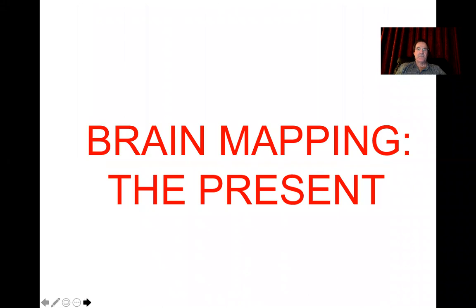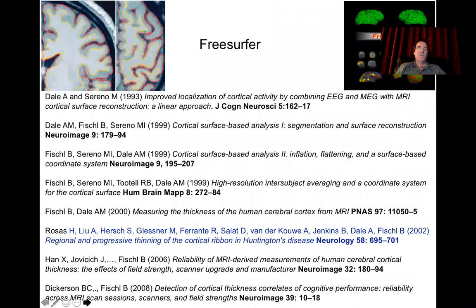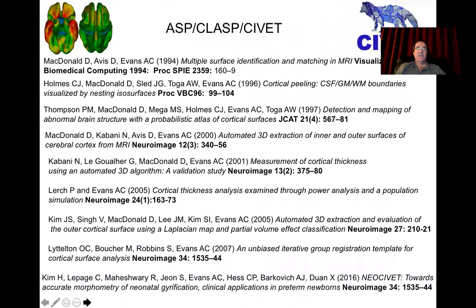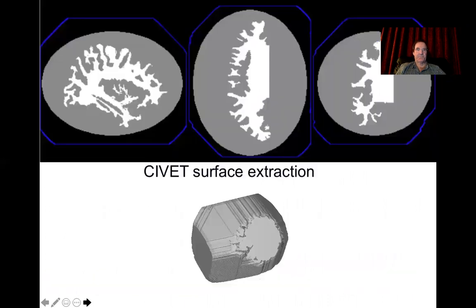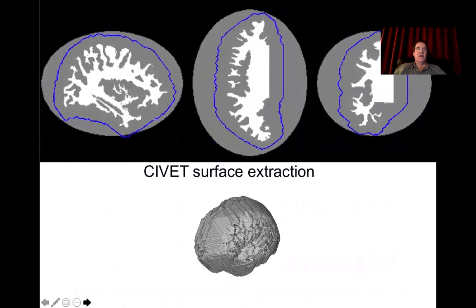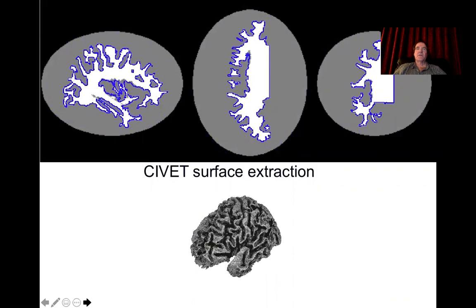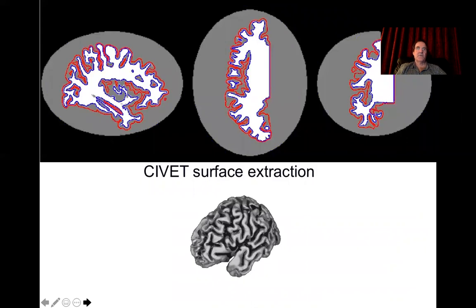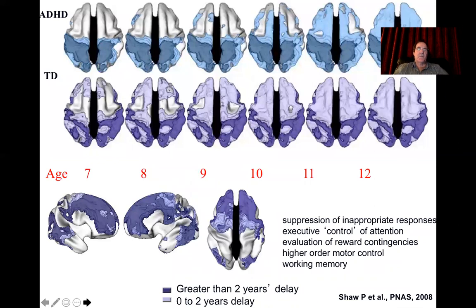Moving to the present, I'll talk about two elements: structural and functional. We saw the introduction of FreeSurfer, a tool for extracting cortical brain surfaces. At the same time, our own CIVET was also being developed, doing much the same thing — extracting three-dimensional cortical surfaces using finite element mesh modeling to fit to cortical surface features, extracting both inner and outer boundaries of the cortex, so we can get vertex-wise mapping of cortical thickness. An example from 200 patients showed the delayed maturation of frontal cortex in ADHD compared with typically developing children from age 7 to age 12.